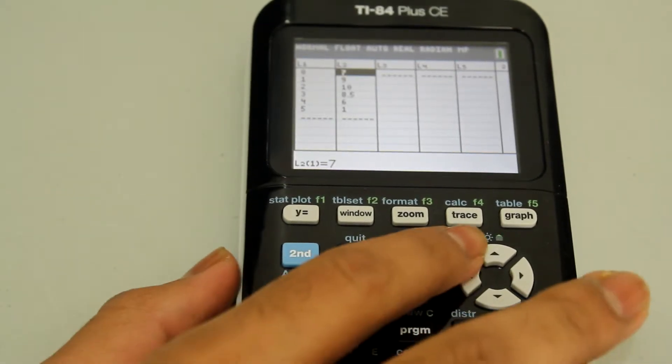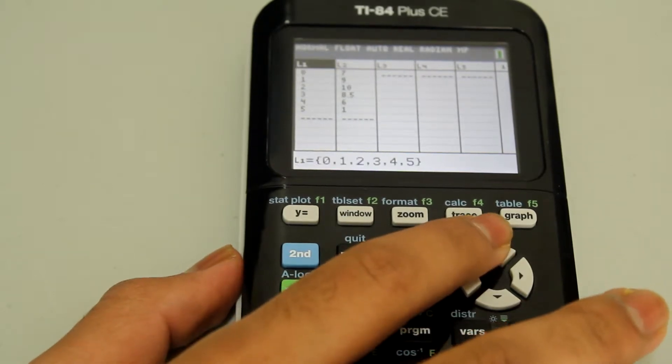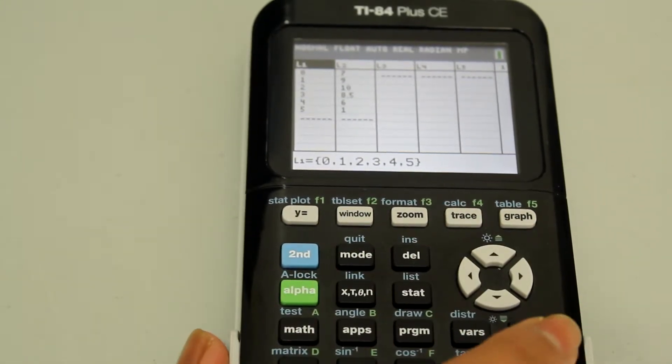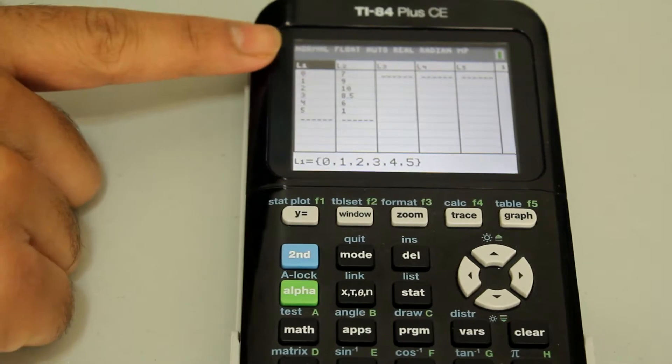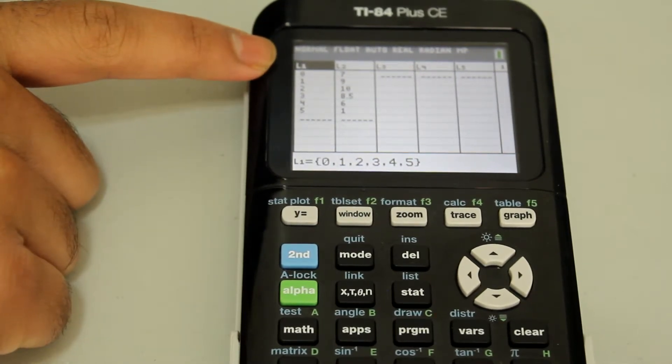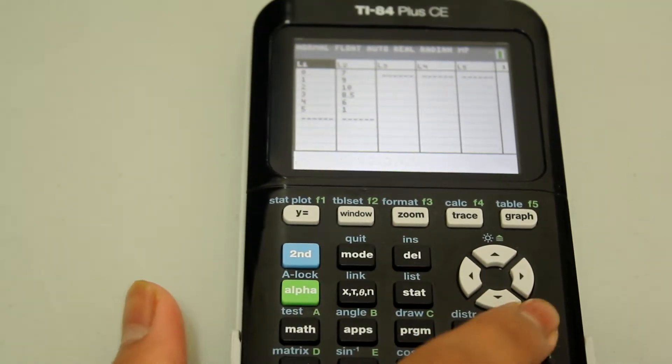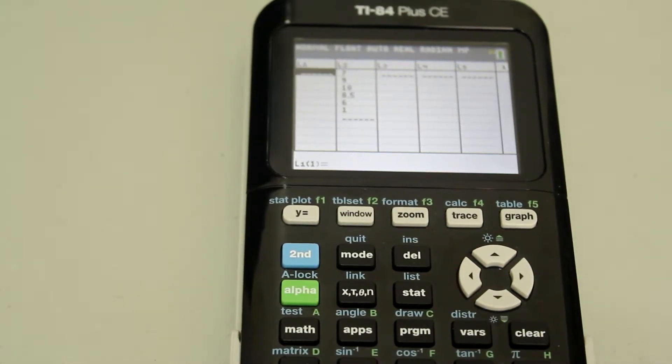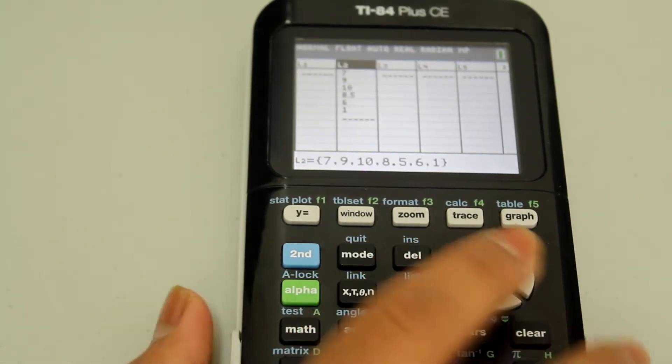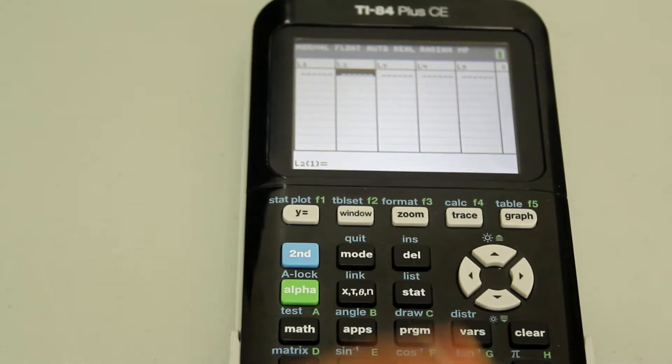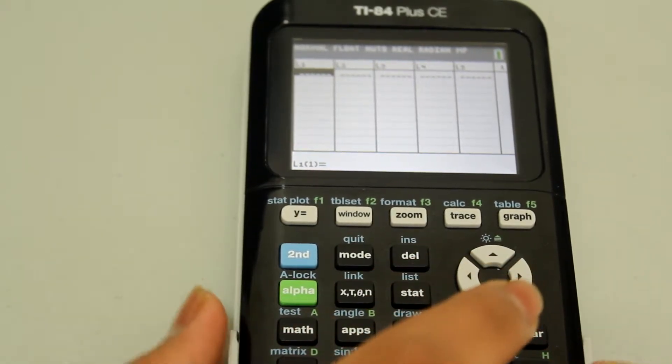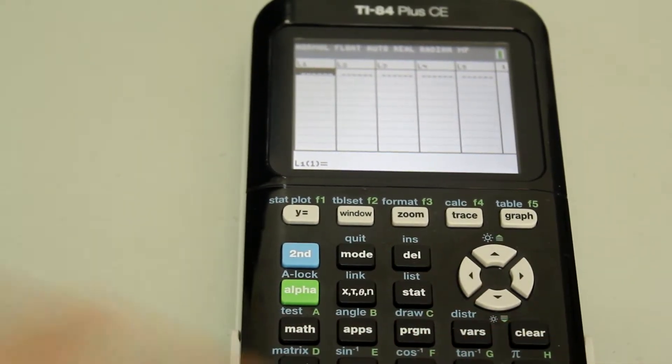Now if you have anything in L1 or L2, you can clear that by going to the top of that column where it says L1 or L2, and then hitting clear and then enter afterwards. Same thing for L2, clear and then enter and that clears the entire column. Now we're just going to go ahead and enter the data.